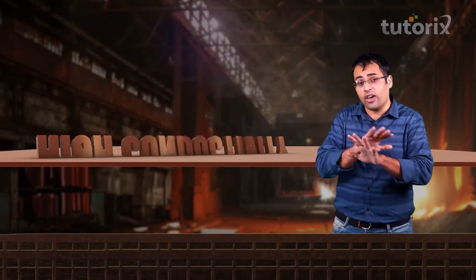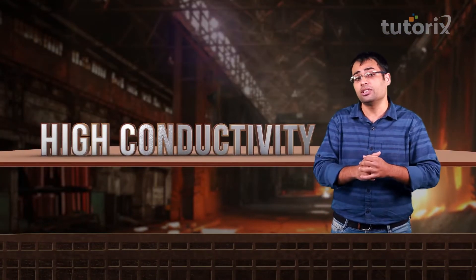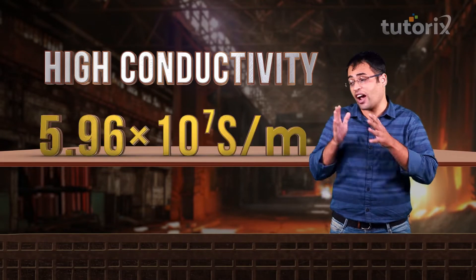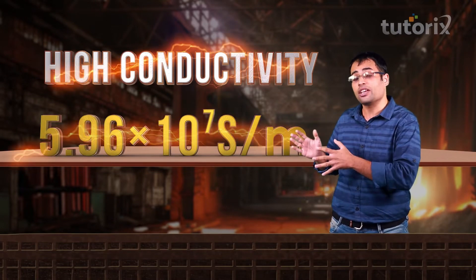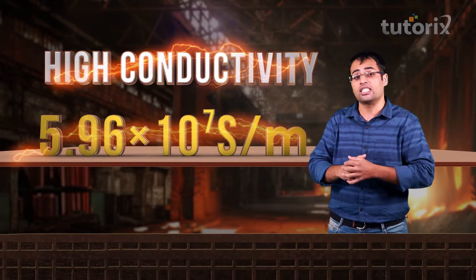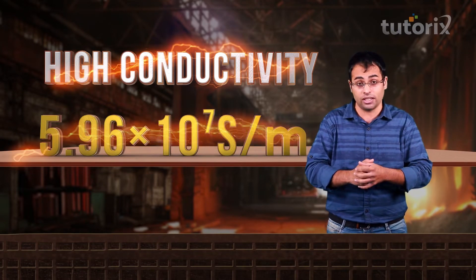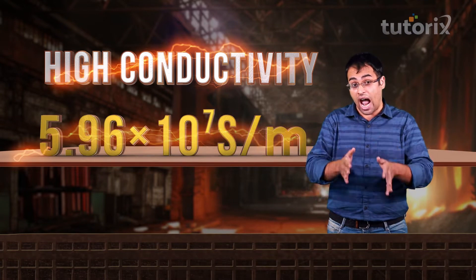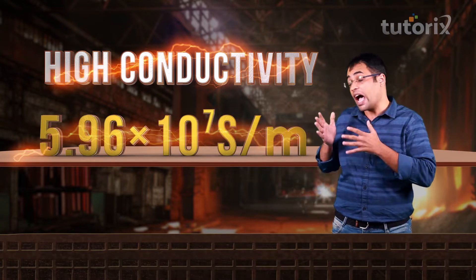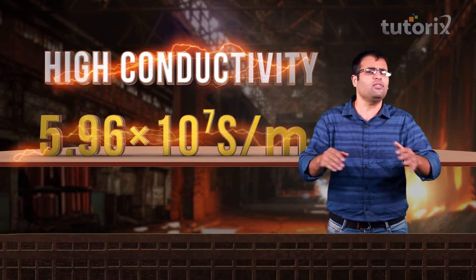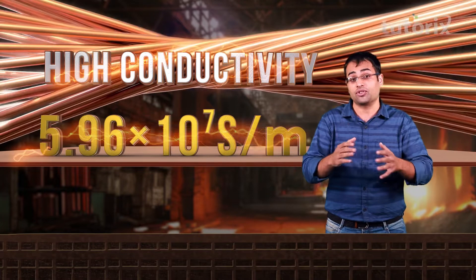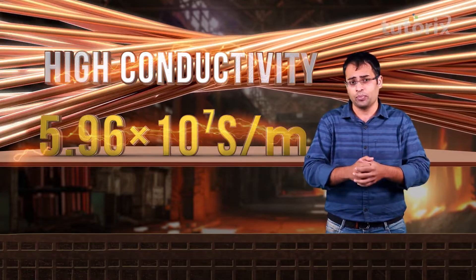Not only this, even copper as a metal has a very high conductivity value of 5.96 × 10⁷ Siemens per meter. And because of this high conductivity value, copper is extensively used in electrical wires.